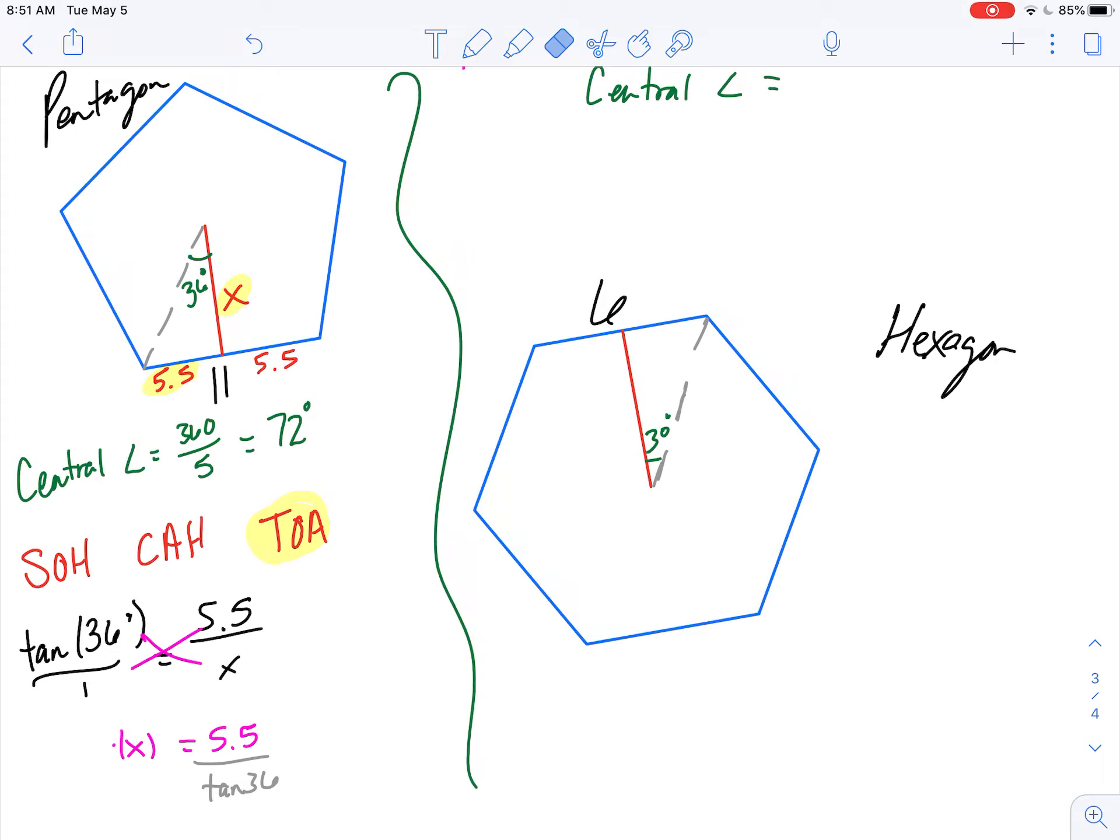So now I'm just looking at x equals 5.5 over the tangent of 36. You can type that into your calculators, and you'll get some number. And it's 7.57 is what you're going to get.